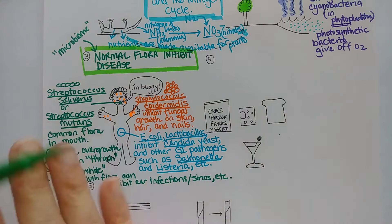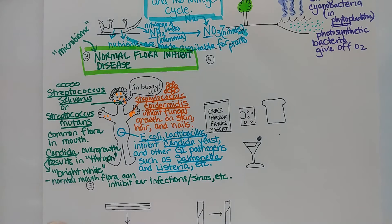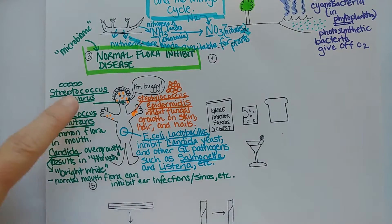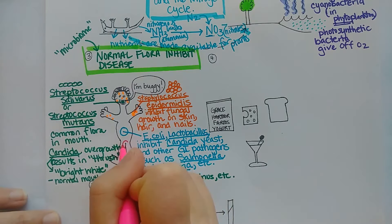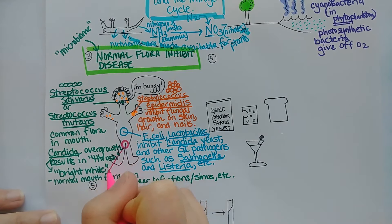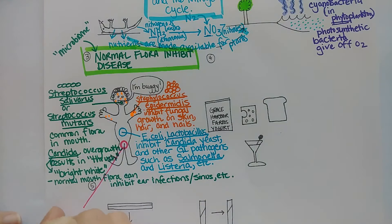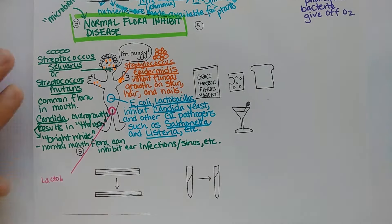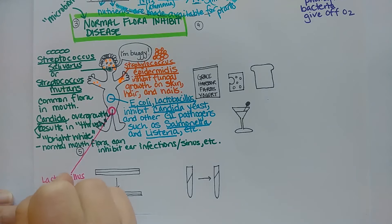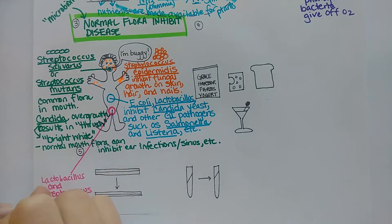Also, let's add—we did Lactobacillus here and we did Streptococcus here—and both of those are also found in the reproductive tract. So Lactobacillus and Streptococcus help inhibit yeast infections in the reproductive tract, in the vagina.